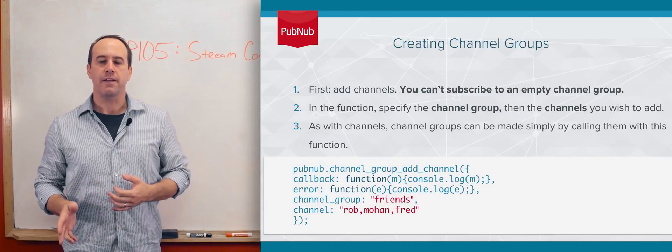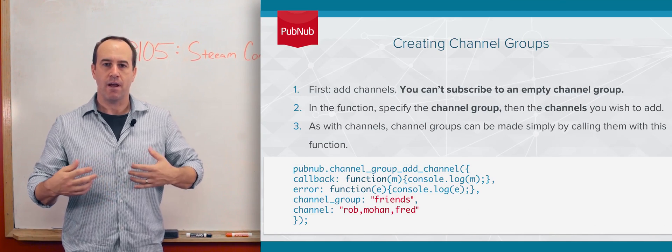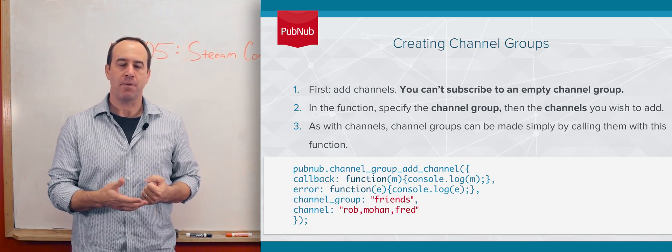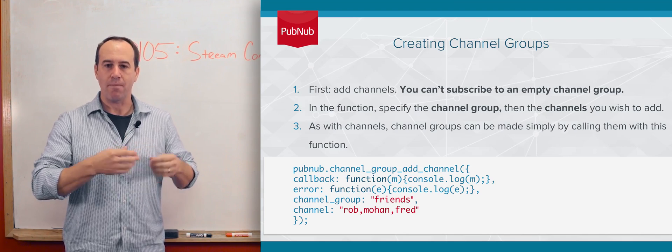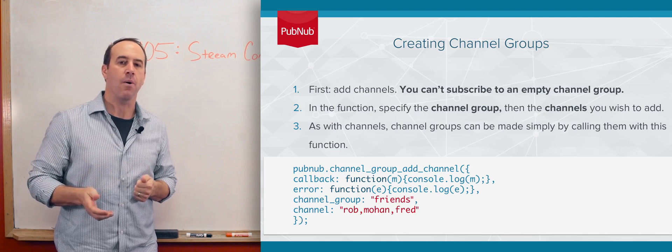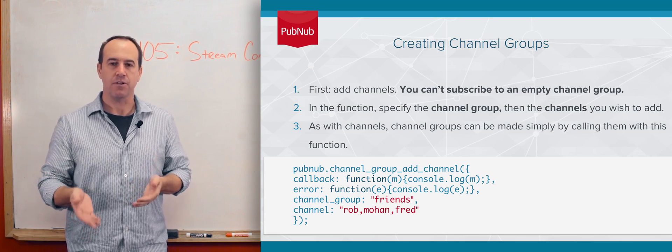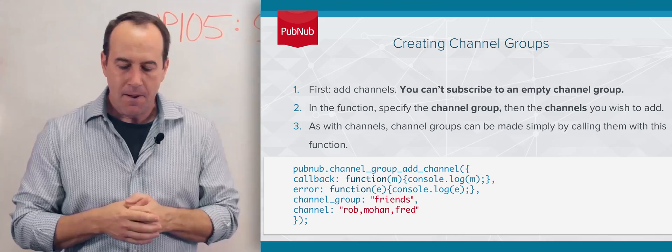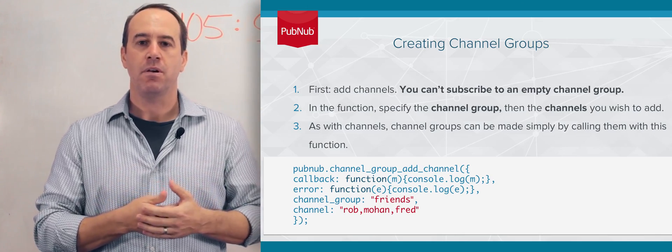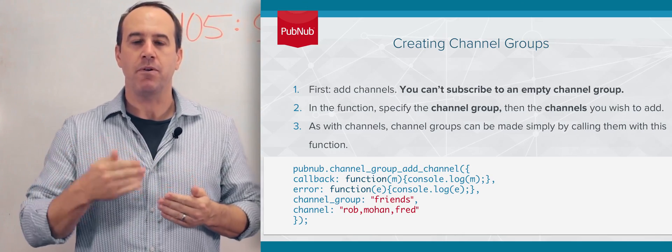Using Channel Groups is slightly different in how you implement the actual code versus multiplexing. With multiplexing, you just subscribe, provide a list of channels, and you're good to go. With Channel Groups, you have to add a channel or multiple channels to a Channel Group and then subscribe to that Channel Group. But you can't just subscribe to an empty Channel Group. It will give you an error.